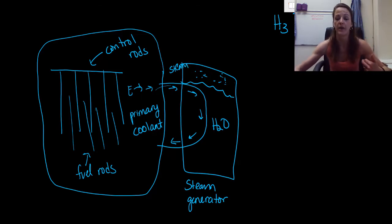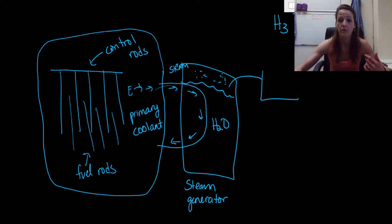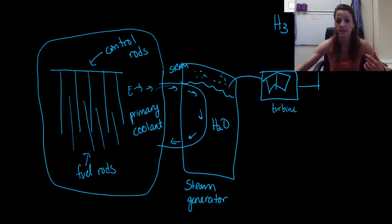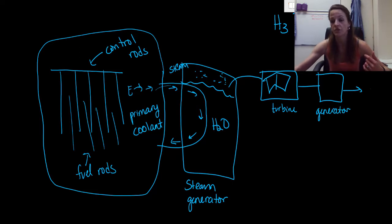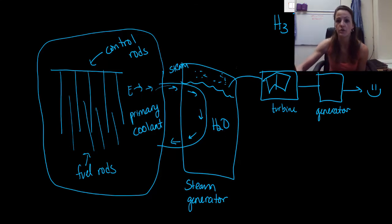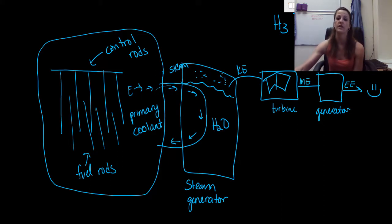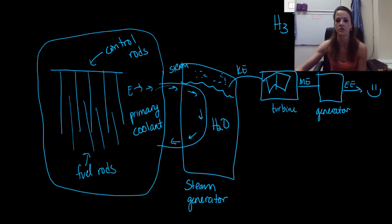Just like in a conventional power plant, we take that steam and pump it into our turbine. The turbine is connected to a generator. We take our kinetic energy, put it into the turbine where we convert it to mechanical energy. From there we use the generator to convert mechanical energy to electrical energy, and then we have our electricity released out to the community.